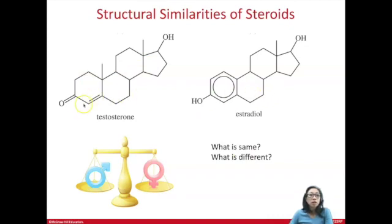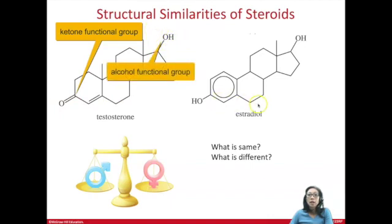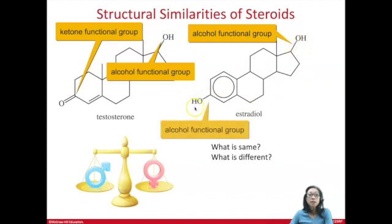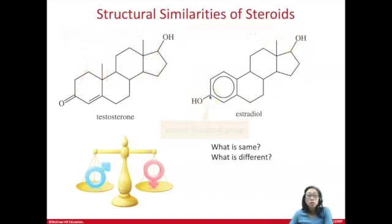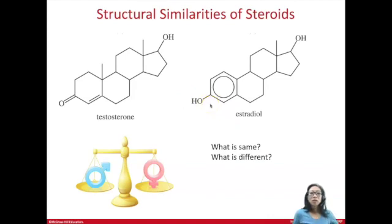What's different? Testosterone has a ketone group and an alcohol group. Estradiol has the same alcohol group in the same position, but instead of the ketone group, it has an alcohol group. Really, what's different is that testosterone has an oxygen with a double bond compared to estradiol having an oxygen with a single bond and a hydrogen. There's also a benzene ring with three double bonds on estradiol.